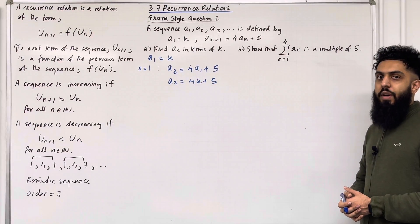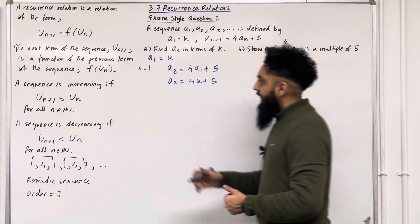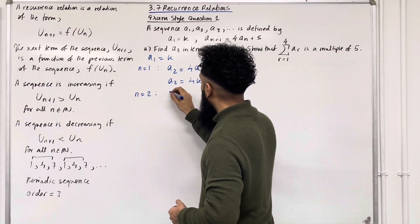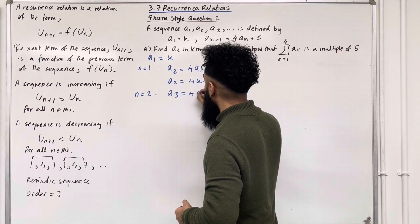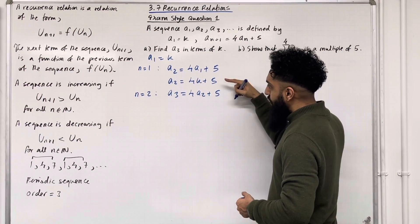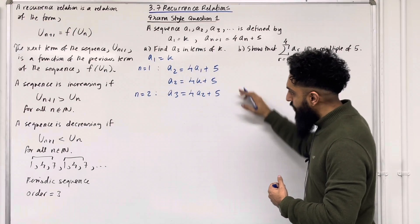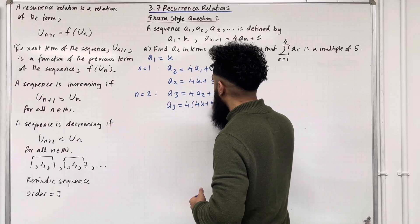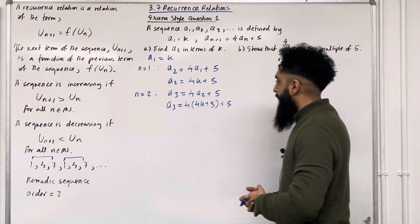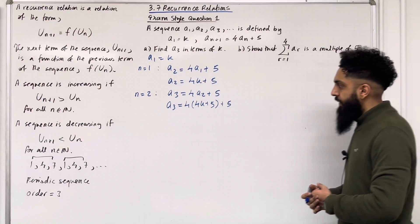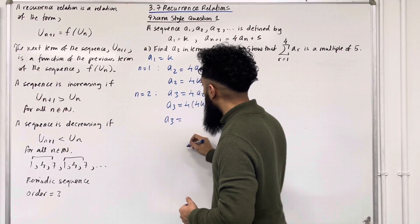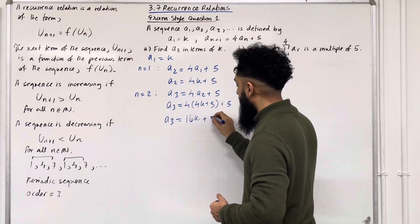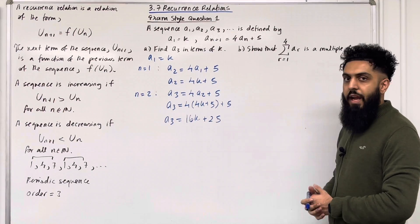Now we can proceed forward and work out a3. We substitute n = 2 into the recurrence relation to get a3 = 4a2 + 5. Since a2 = 4k + 5, substituting gives a3 = 4(4k + 5) + 5. Simplifying: a3 = 16k + 20 + 5, so a3 = 16k + 25.